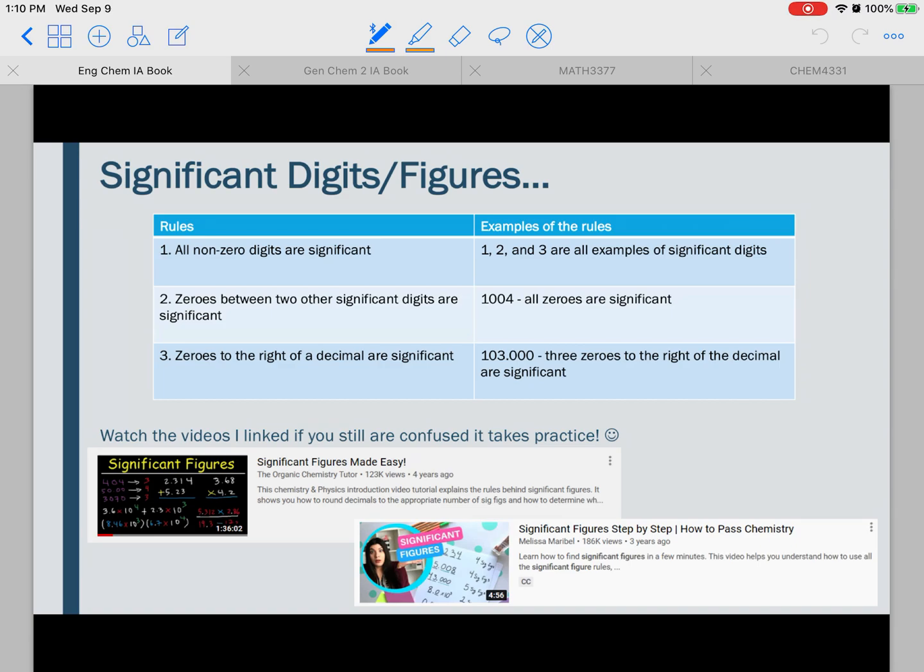Alright, sig figs. So I went ahead and just wrote down the three basic rules for significant figures. The first rule is that all non-zero digits are significant. So over here, I wrote some examples of non-zero digits that would be significant, like one, two, or like a three. Those are all examples of significant digits.